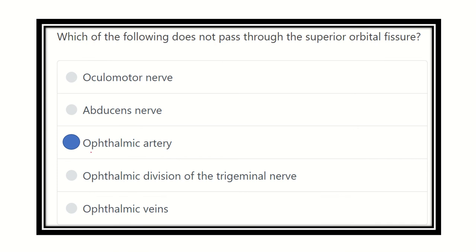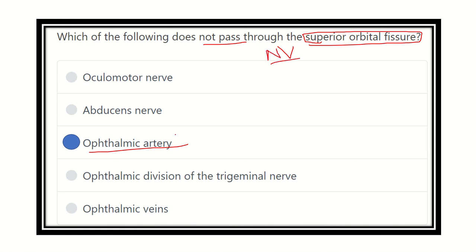Here we can see the ophthalmic artery does not pass through the superior orbital fissure. The superior orbital fissure passes vein and nerve — no artery.